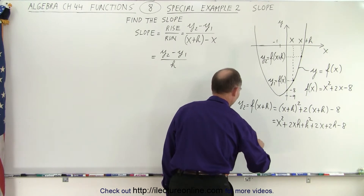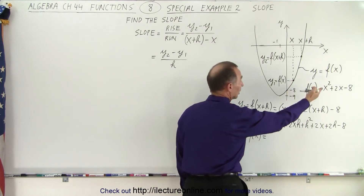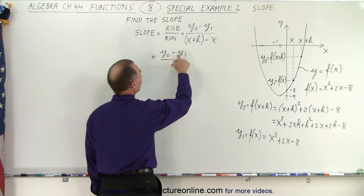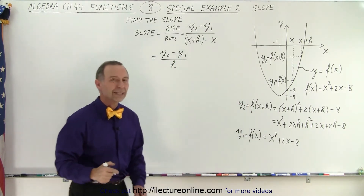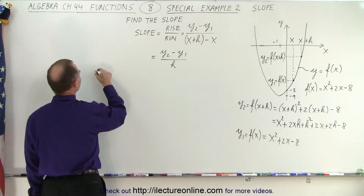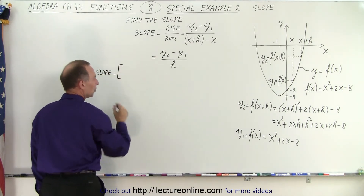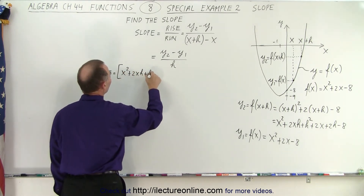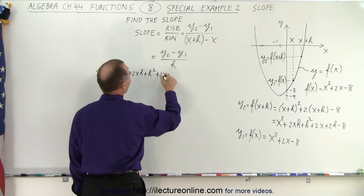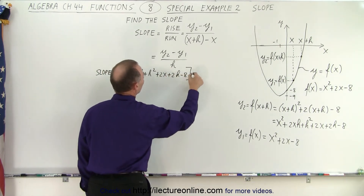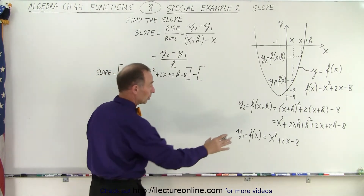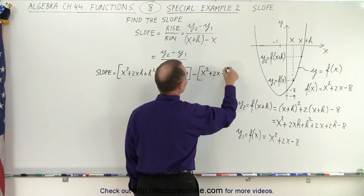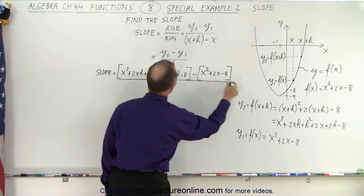Then y1 is equal to the function evaluated at x, which is simply x squared plus 2x minus 8. Now what we need to do is subtract those two from each other — y2 and y1 need to be subtracted from one another. So the slope is equal to y2, which is x squared plus 2xh plus h squared plus 2x plus 2h minus 8, minus the function evaluated at x, which is x squared plus 2x minus 8. The whole thing is divided by h.